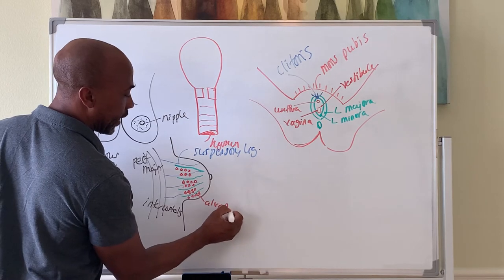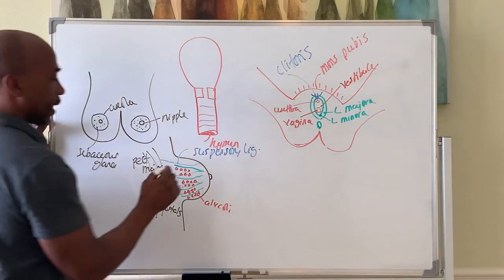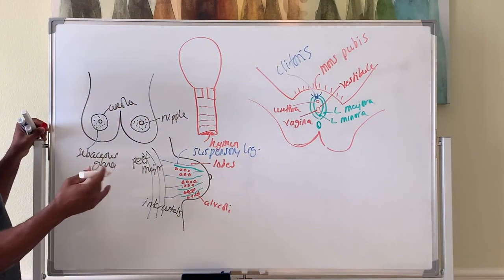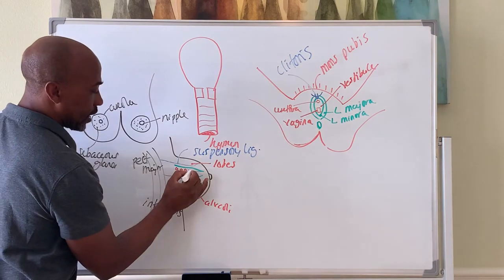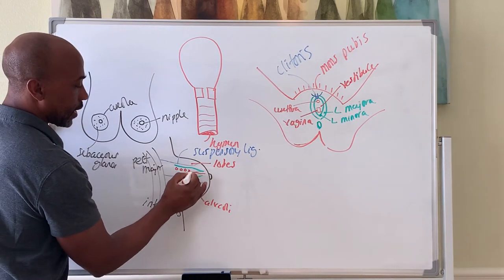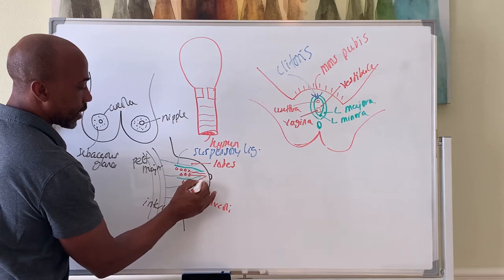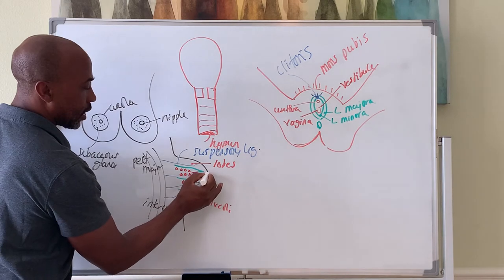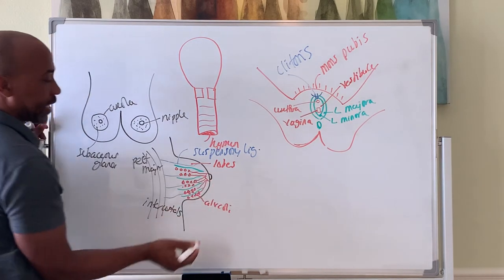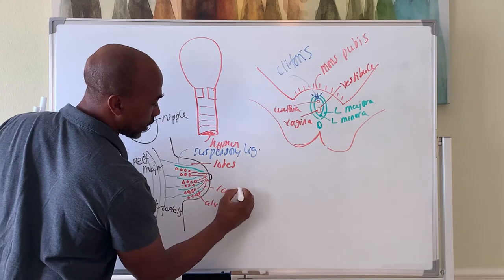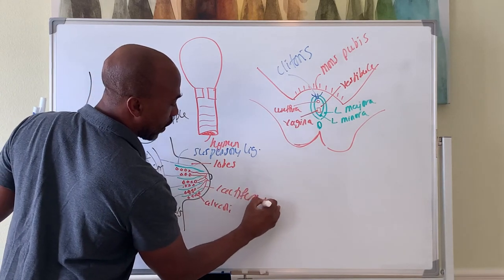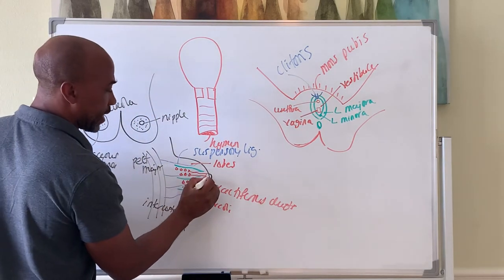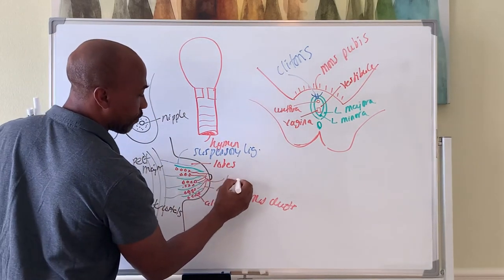The alveoli in the lobes of the breast are linked to lactiferous ducts that bring the milk forward. They carry the milk forward to an area called lactiferous sinus.